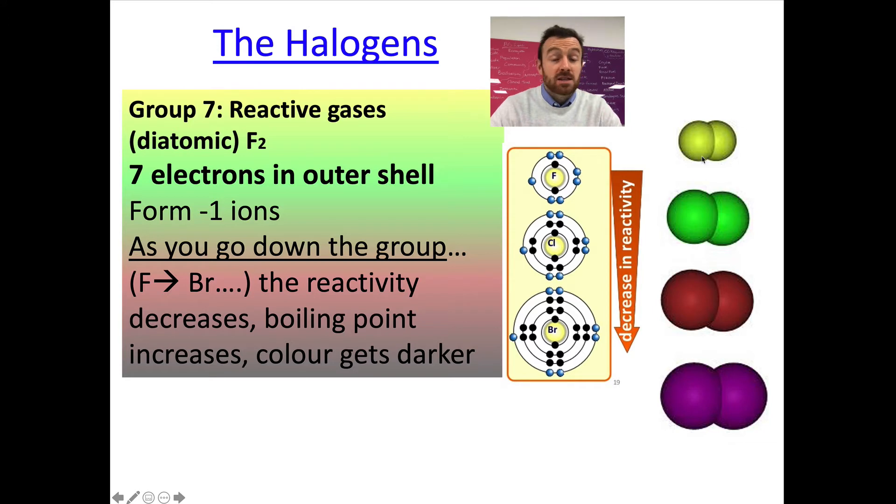So, here's a kind of a space fill model of fluorine gas, chlorine, bromine, and iodine. So, they have seven electrons in their outer shell. They form minus one ions. And in this case, as you go down the group, the reactivity actually decreases.